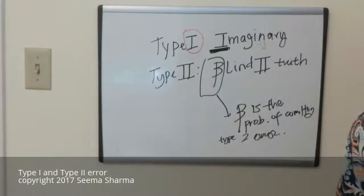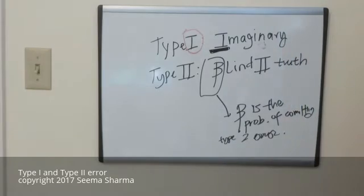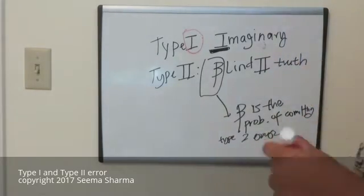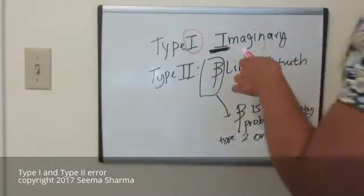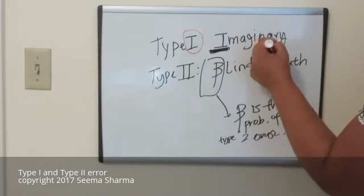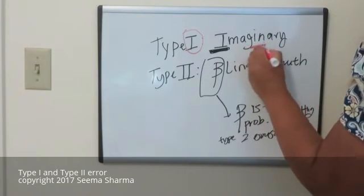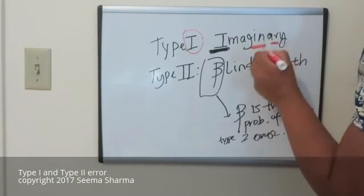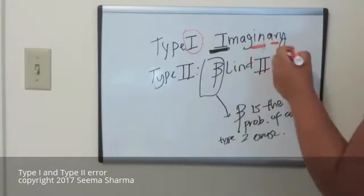As far as remembering when you wrongly rejected which hypothesis, a good way to remember that is this word imaginary that I use for Type I has the letters N and R. That means that you rejected the null hypothesis.